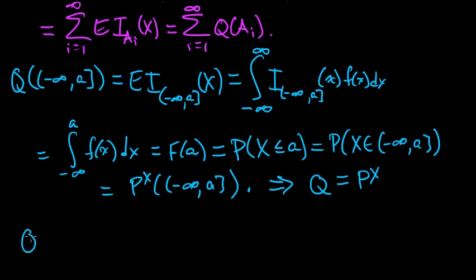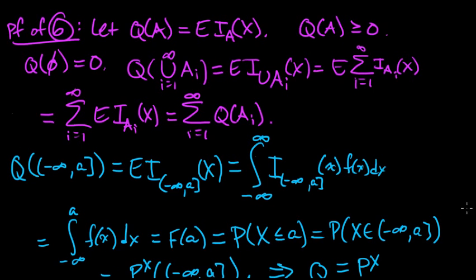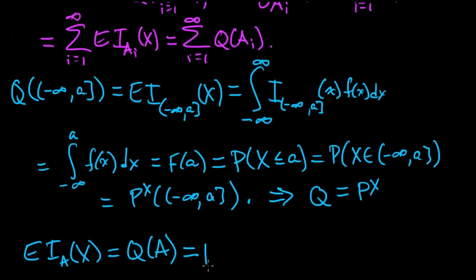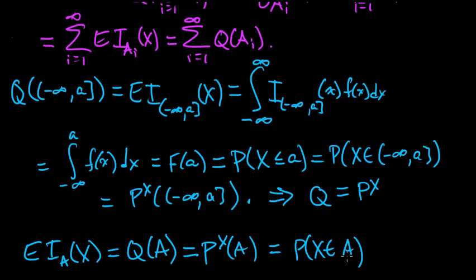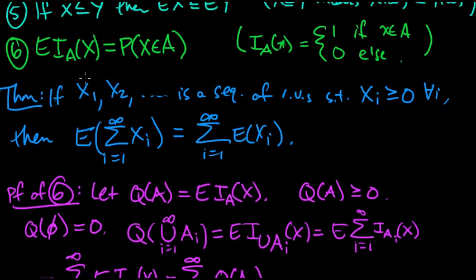Therefore, Q(A) = P_X(A), and since Q(A) was defined as the expected value of the indicator of A, we have E[1_A(X)] = P_X(A), which is by definition the probability that X is in A. That is exactly what we were trying to prove: the expected value of the indicator equals the probability that X is in A.